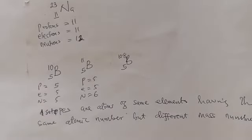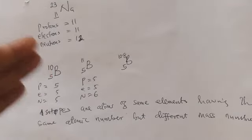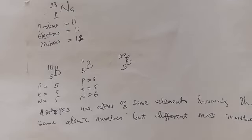So in a situation like this, how do you calculate the average? Which number will you use to represent the mass of boron? You calculate the weighted average, and this gives you the relative atomic mass of that element. We'll look at that extensively, but first let's look at more examples of isotopes.